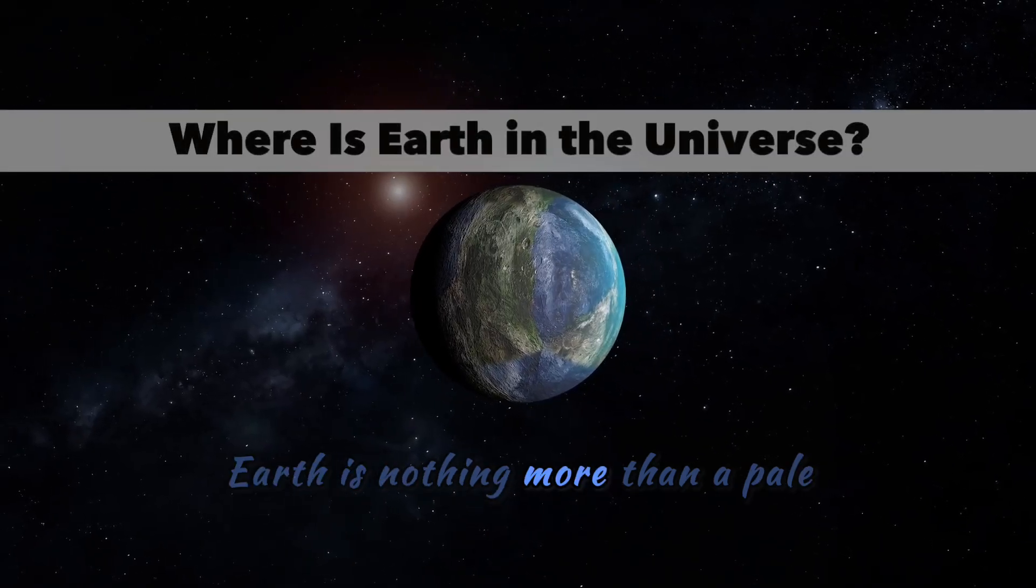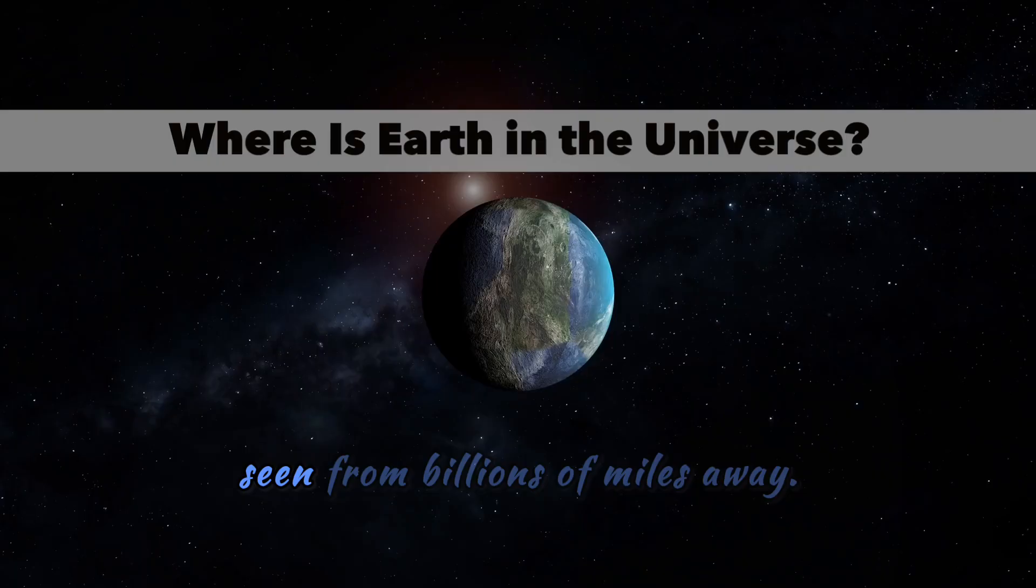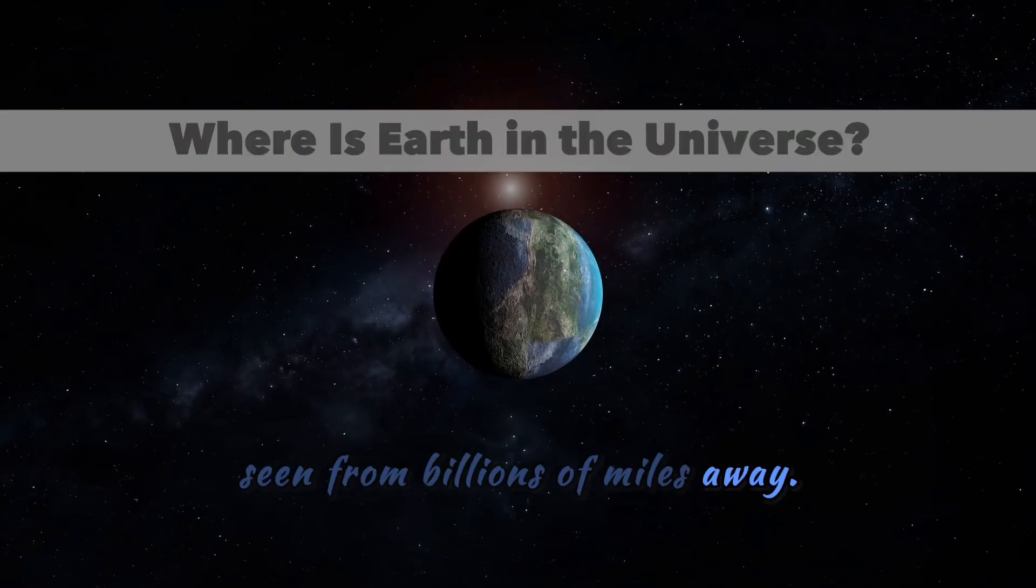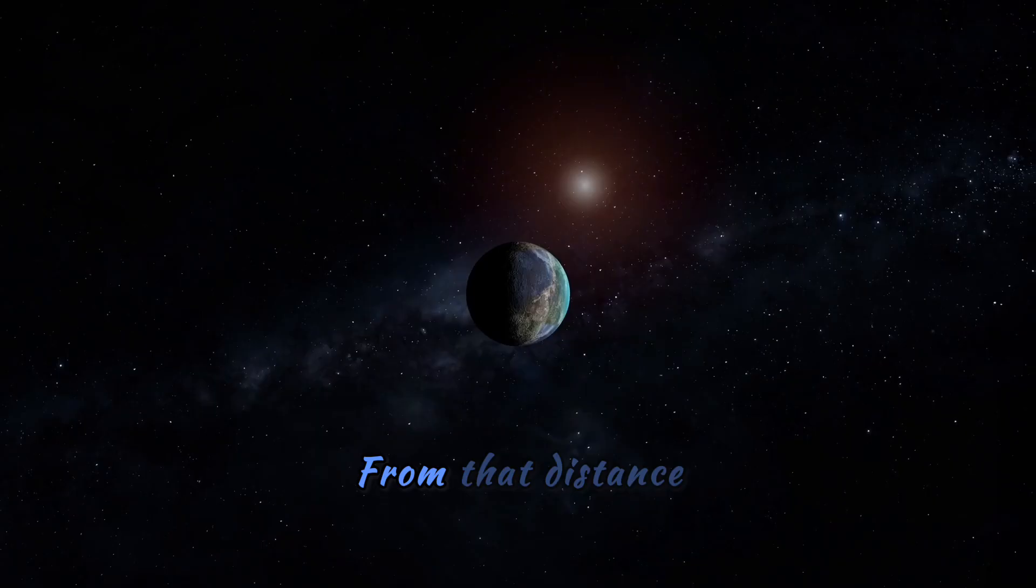Carl Sagan once said that Earth is nothing more than a pale blue dot, a fragile speck suspended in a sunbeam. Seen from billions of miles away, it is smaller than a pixel, barely visible against the blackness of space.